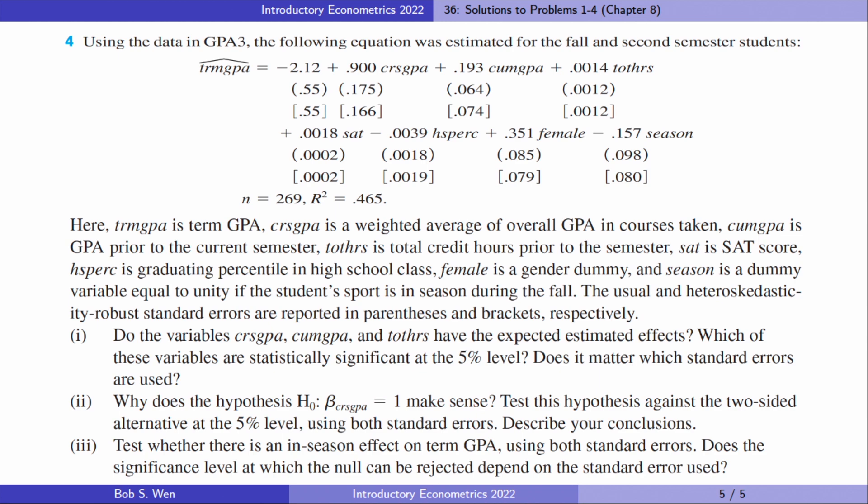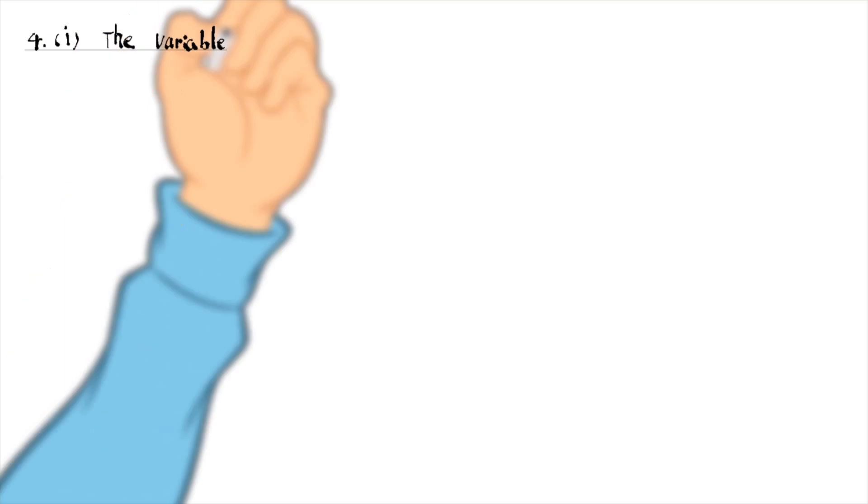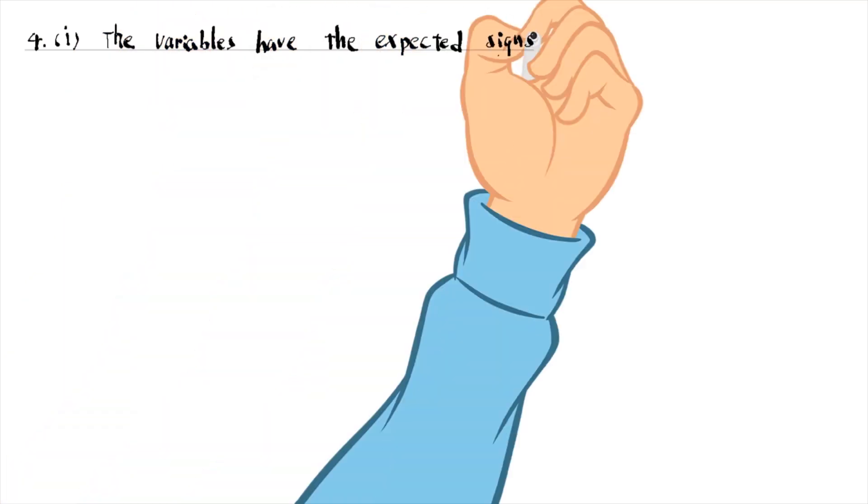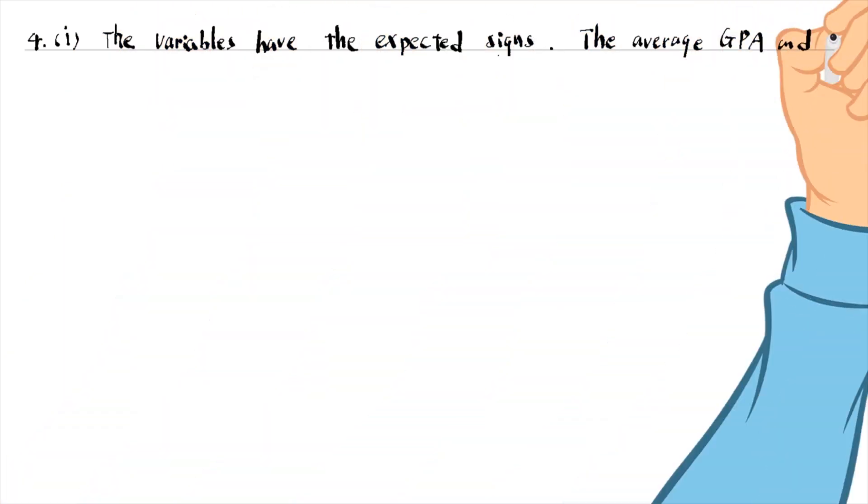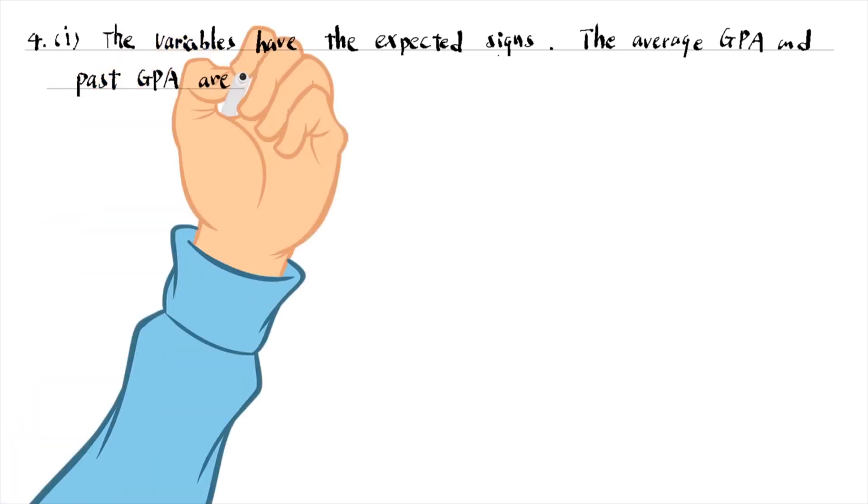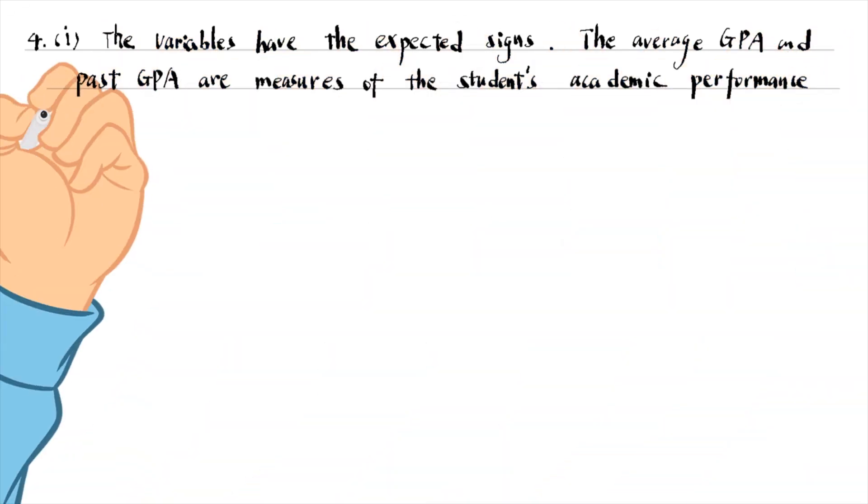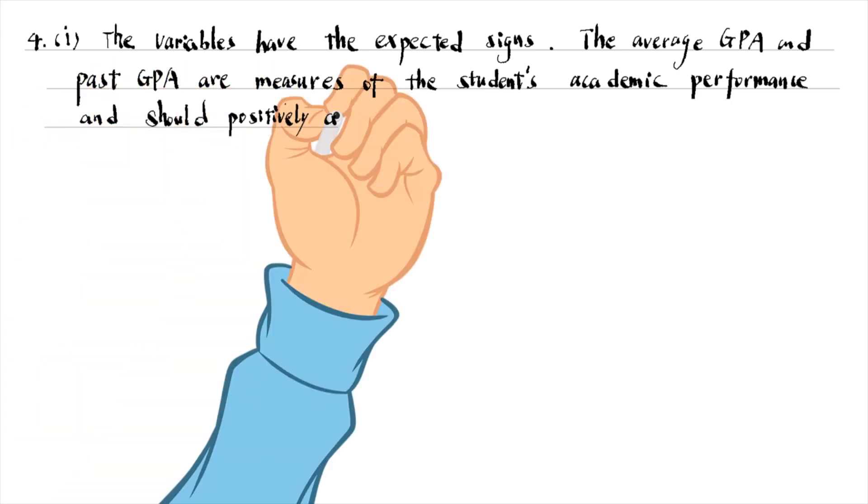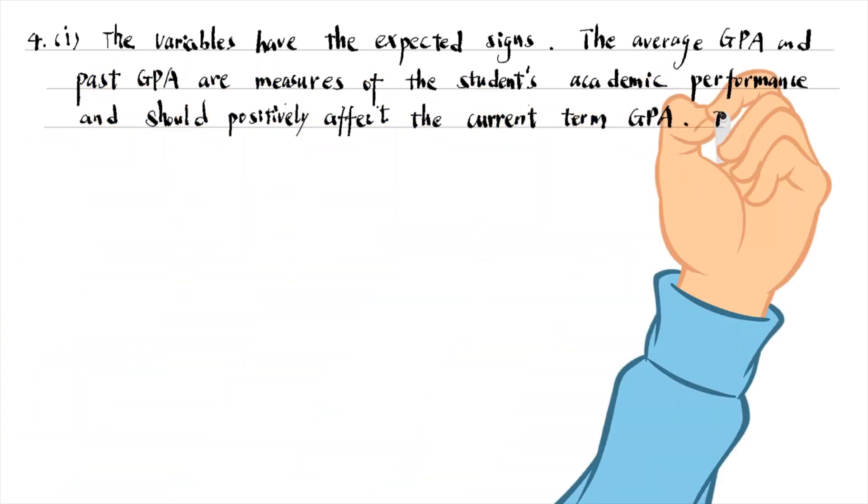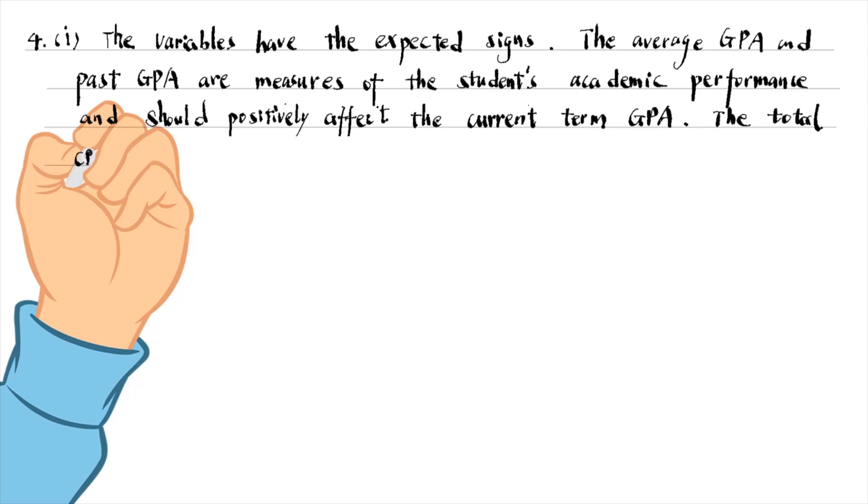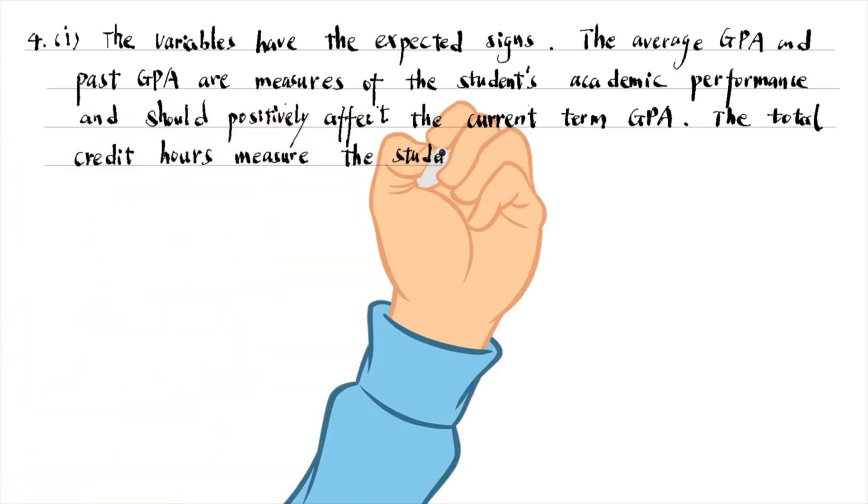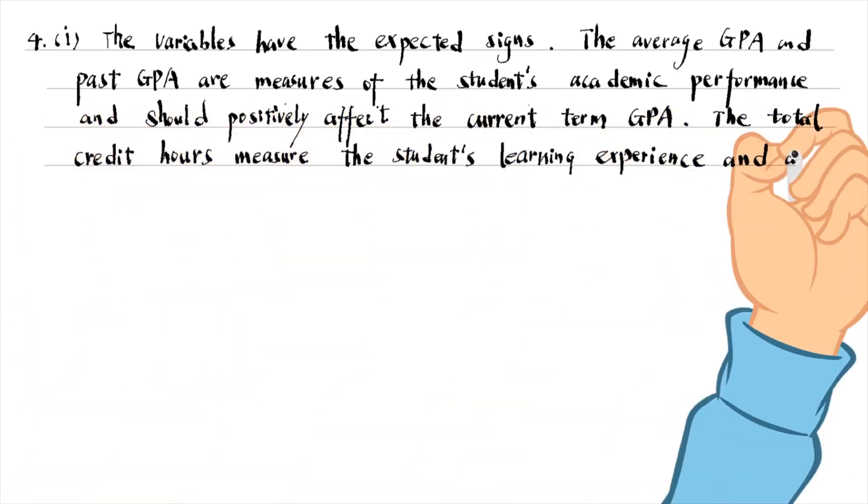The variables have the expected signs in part 1 of problem 4. The average GPA and the past GPA are measures of the student's academic performance and should positively affect the current term GPA.